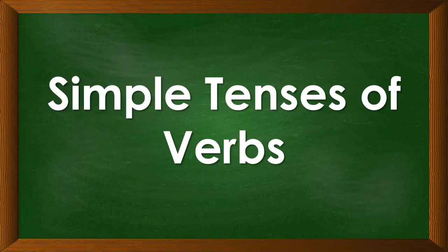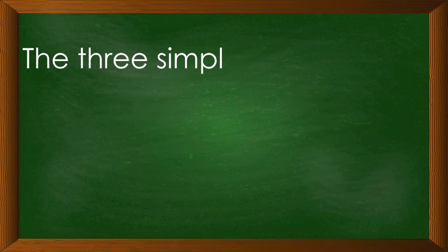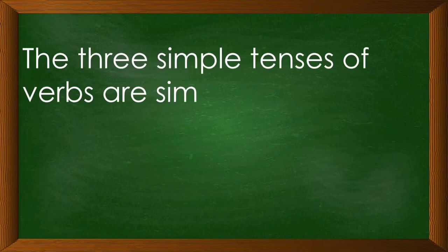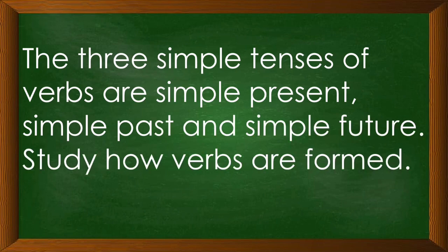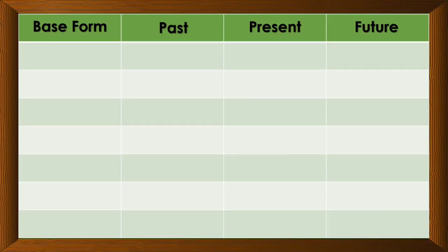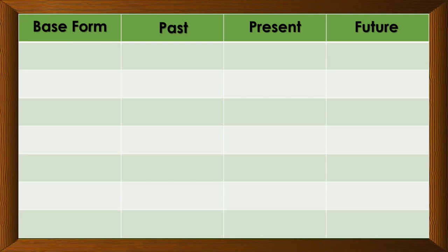The simple tenses of verbs. There are three simple tenses of verbs, and these are simple present, simple past, and simple future. Let us study how the verbs are formed. We have the base form, the past, the present, and the future.